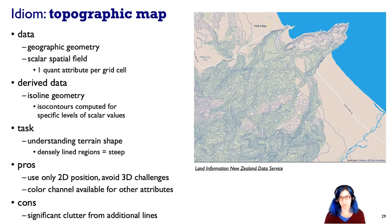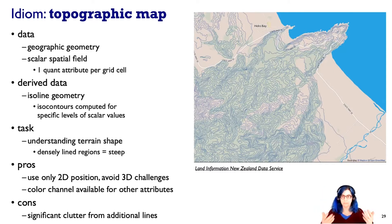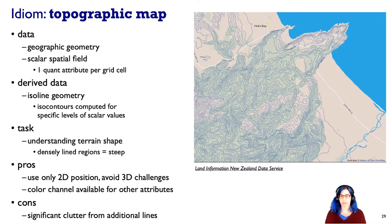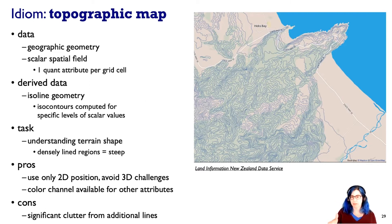Often these are regularly sampled or irregularly sampled, either way. What we do with these maps is we derive data — in particular, we're deriving an iso line. An iso line or isocontour is a line of equal value for that scalar attribute. On the map, we're looking for the lines where things are all the same height above sea level, and typically these form closed contours.